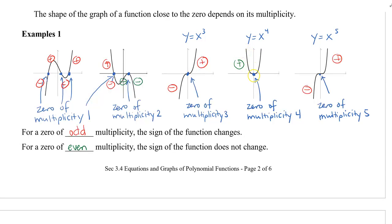After it hits the zero, it goes back up and it's still positive. So when the exponent is even, or there's a zero of multiplicity of an even number, the sign of the function does not change.